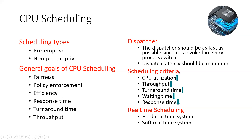Now, there are some scheduling criteria that scheduling is based on. CPU utilization — the criteria should achieve the best, most efficient utilization. An upward arrow means increasing power, a downward arrow means decreasing. Throughput, response time, and turnaround time are the key criteria.